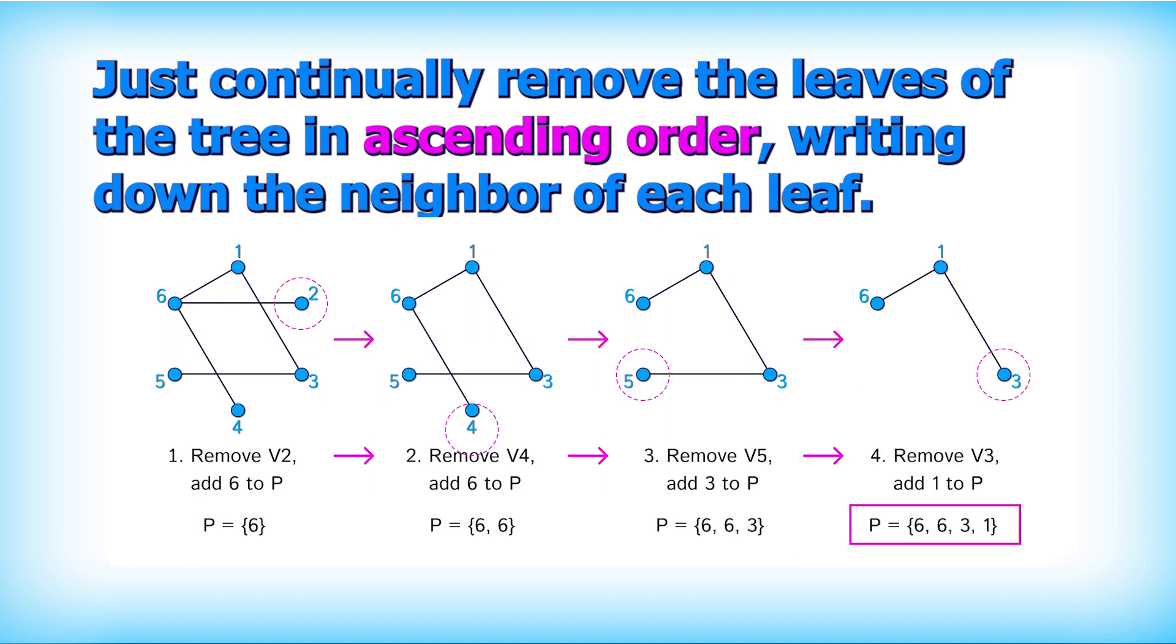So we add 3 to our proof of sequence. Finally, 3 is the next smallest leaf and it was connected to 1, giving us the final proof of sequence 6, 6, 3, 1, as expected.